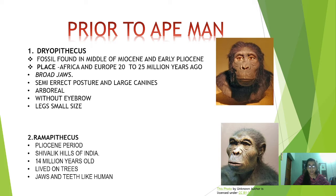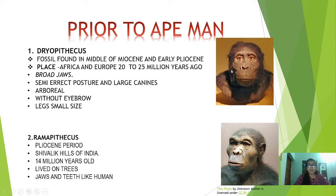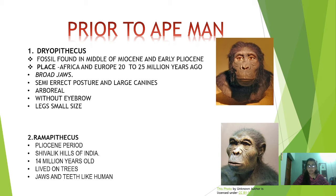Moving to the main part — prior to the ape man, two forms of ancestral man were seen: Dryopithecus and Ramapithecus. Dryopithecus originated mainly during the middle Miocene and early Pliocene, around 20 to 25 million years ago, and evolved in Africa and Europe. You can see they had broad jaws, no eyebrow ridges, and were arboreal — living on trees. They had a semi-erect posture and large canines, and were mainly carnivorous.